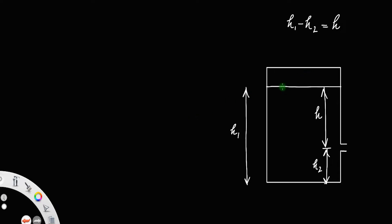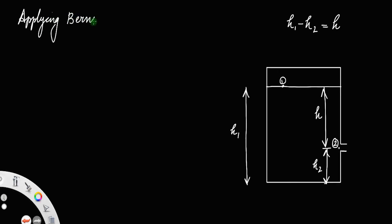Now, let us take two points — one at the surface of the liquid and one at the hole. Let us call them point 1 and point 2. Applying Bernoulli's theorem at these two points.